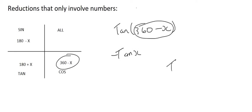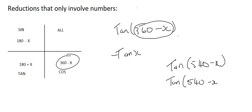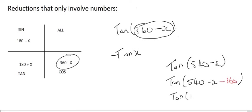We also looked at questions that didn't perfectly match the CAST diagram, such as the tan of 540 minus x. What we did was simply subtract 360 degrees, because mathematically, if you subtract 360, you are still at the same place on the CAST diagram. We simplified that and ended up with 180 minus x, which we could then reduce.